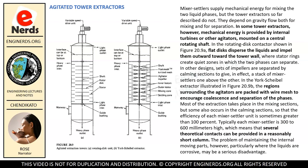In the York-Scheibel extractor illustrated in Figure 20.9B, the regions surrounding the agitators are packed with wire mesh to encourage coalescence and separation of the phases. Most of the extraction takes place in the mixing sections, but some also occurs in the calming sections, so that the efficiency of each mixer-settler unit is sometimes greater than 100%. Typically each mixer-settler is 300 to 600 millimeters high, meaning several theoretical contacts can be provided in a reasonably short column. The problem of maintaining internal moving parts, particularly where the liquids are corrosive, may be a serious disadvantage.